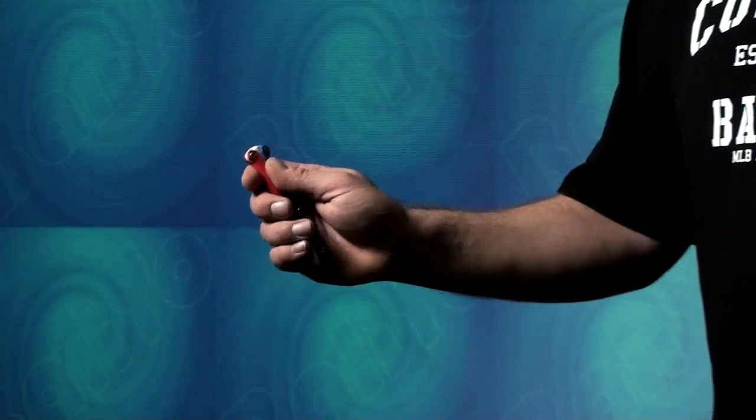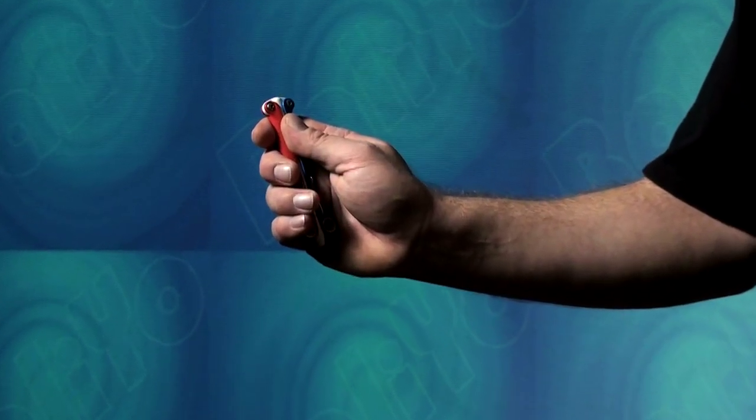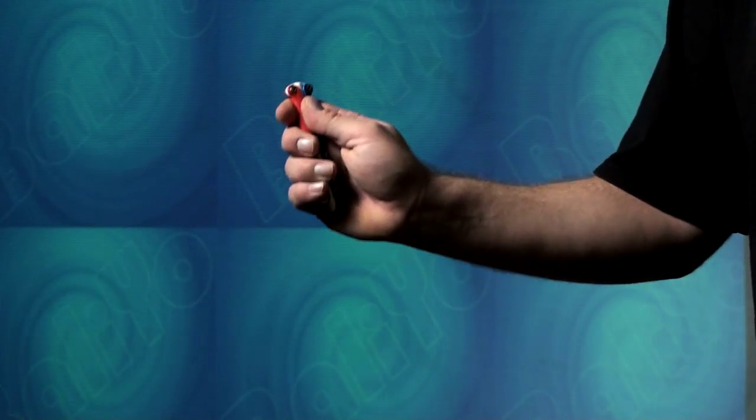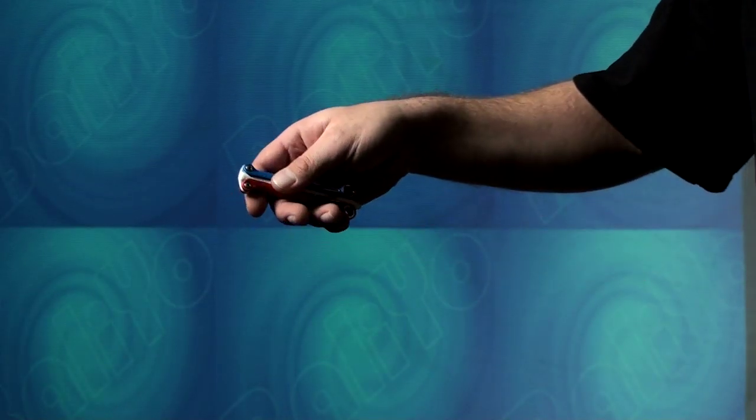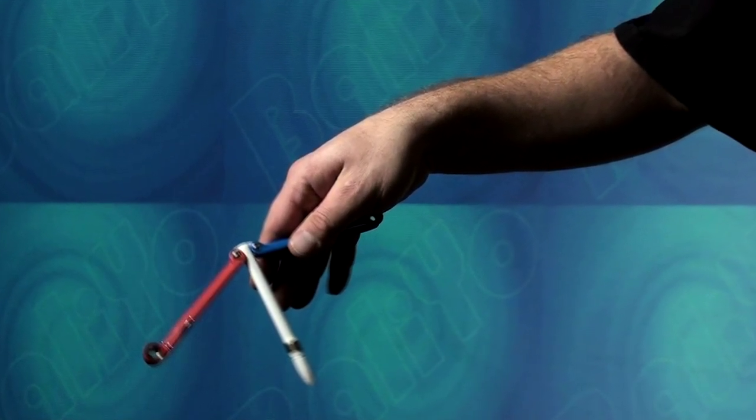The single flip is a simple balisong trick that tests your timing. Begin by gripping the balisong with the pivot pin end facing upward and your hand choked up near the top. Tilt your hand so the palm faces downward and release the far handle, in this case the red one, while maintaining a grip on the near handle, here the blue one.